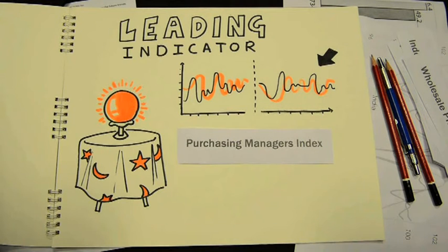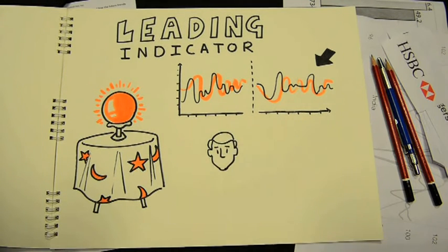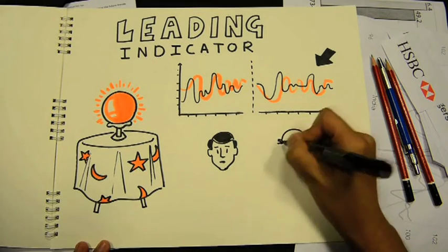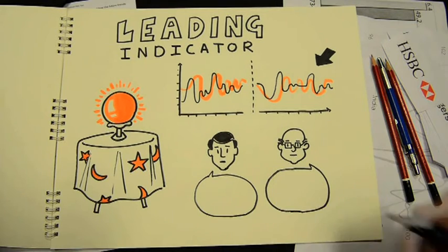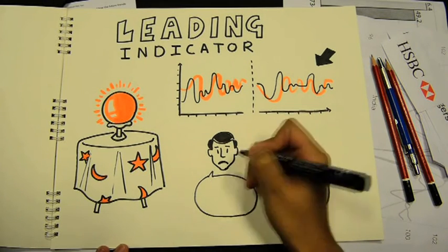The Purchasing Managers Index data on manufacturing and services sector published by HSBC is one example. It's a survey among purchasing managers of different organizations and gets their view on what they expect the next month to be like.